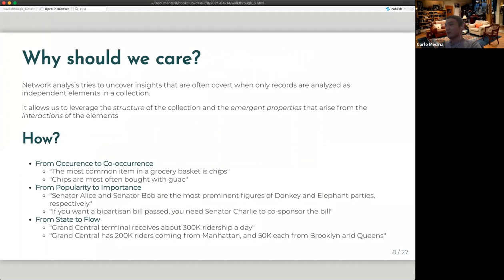So the point now is why should we care about network analysis? So the way I think about network analysis is that when we do regular analysis, we often look at trends, but unlike individual elements of a given collection. But for network analysis, we often try to look at the structure of those collections. We try to uncover certain emergent properties that we normally will not see if we only look at each of the records.